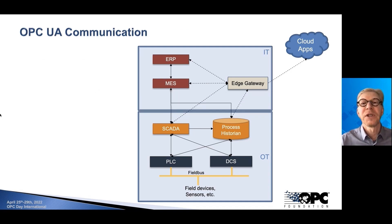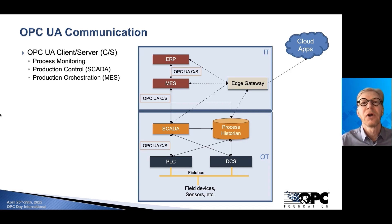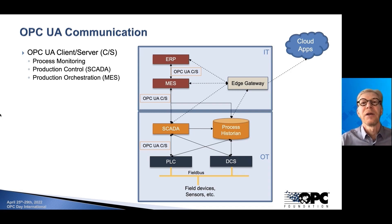OPC UA communication fits very well with this kind of scenario. We have the traditional client-server communication that has been established for a long time. It's especially suitable for process monitoring, production control, and even production orchestration, where it's been very popular between PLC, SCADA, and MES systems. OPC UA also works very well between ERP and MES systems, although it hasn't been the sweet spot so far — but we already have a lot of applications taking advantage of OPC UA at that level too.